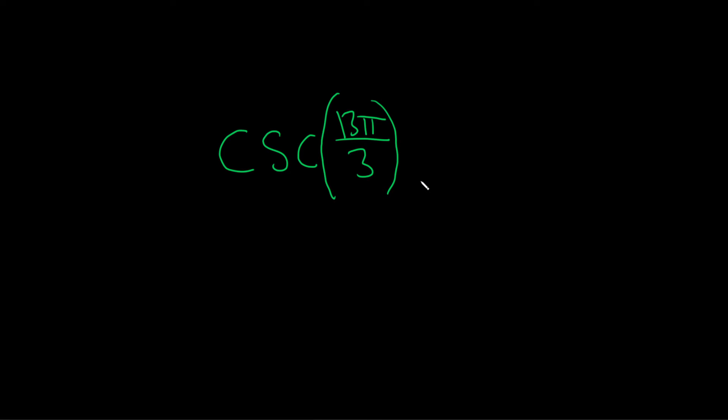In this problem, we're going to find the cosecant of 13π over 3 by hand. To do this, we'll start by writing it in terms of something more familiar.